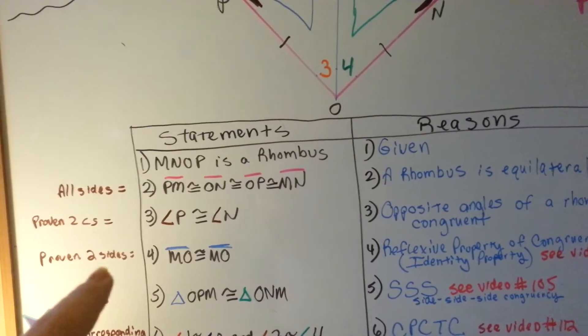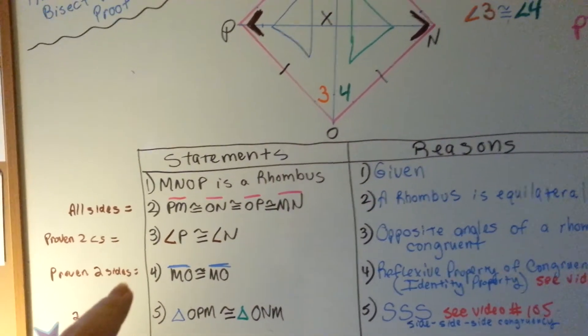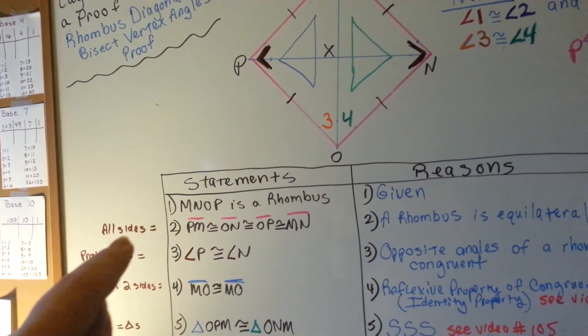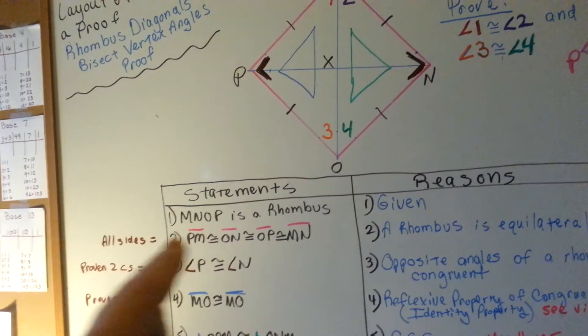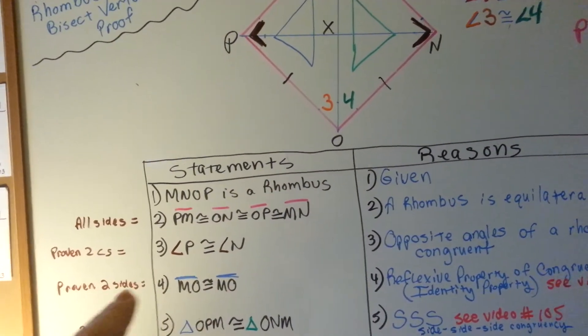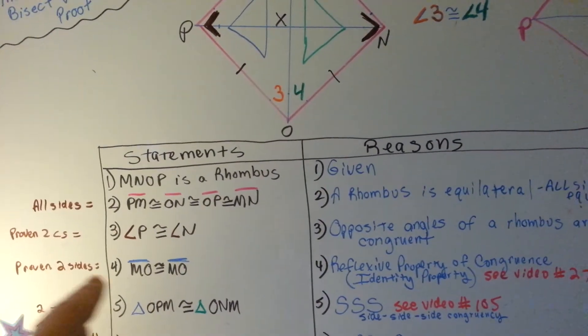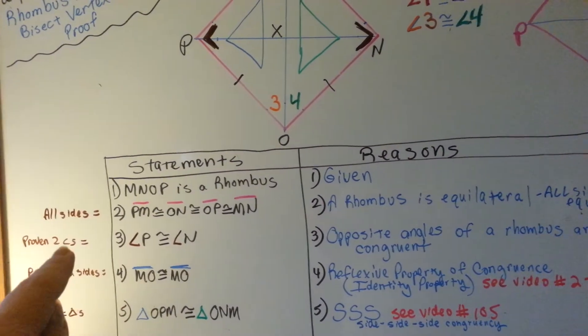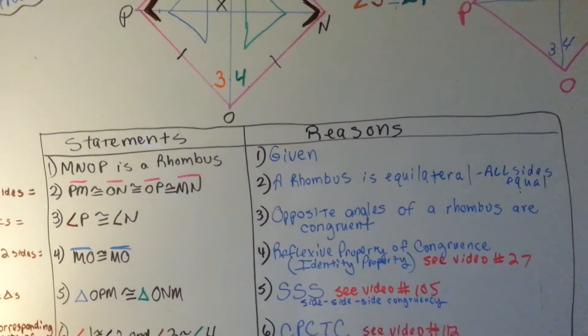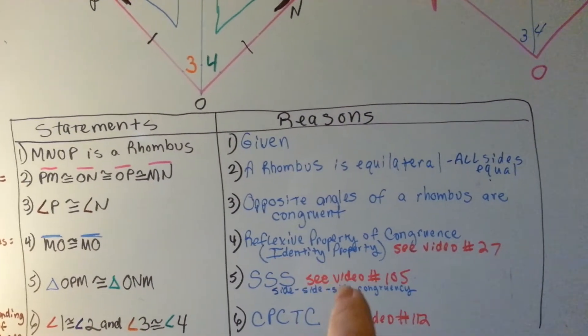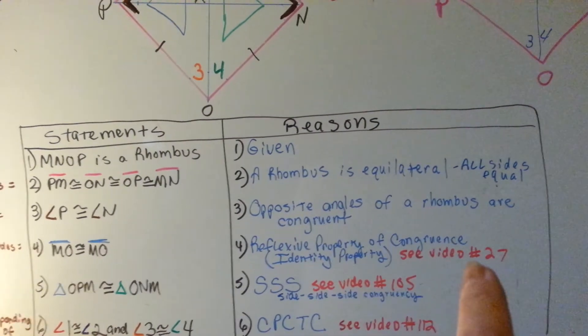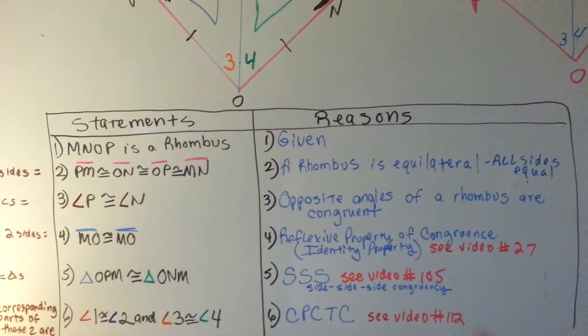Now we've proven that there's two equal sides. We've got the four sides are congruent, and now we've got two sides of a triangle that are congruent and we've got two angles that are congruent. If you don't know what the reflexive property is, I have a video number 27 in my geometry series that you can watch and it'll explain it.